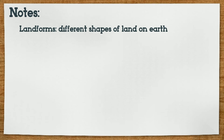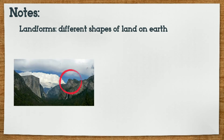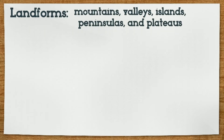Landforms are different shapes of land on Earth. Each landform we explored has a different shape. The Palawan has a rounder peak, while the landforms in Yosemite had a sharper and higher shape. Some of the landforms are mountains, valleys, islands, peninsulas, and plateaus. There are more landforms, but we're going to explore these ones for now.